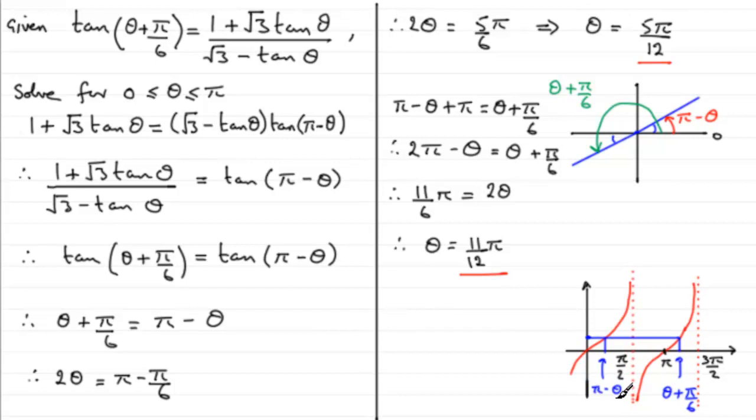So we could say, well, okay, let's add another pi to this, so we've got pi minus theta plus another pi gives me the same tanned value as I would get for theta plus pi upon 6. And that's what I did here. And you could see that through, and get theta equals 11 pi over 12.